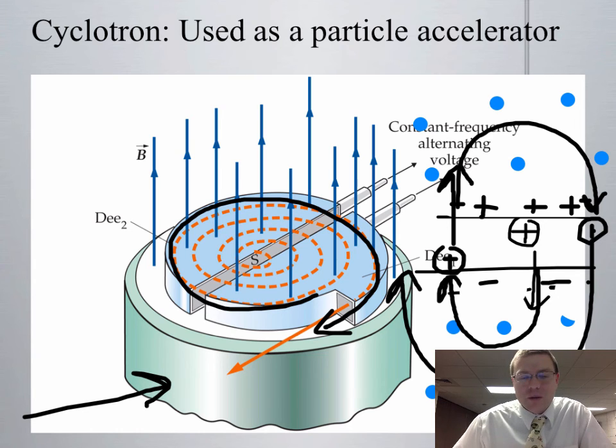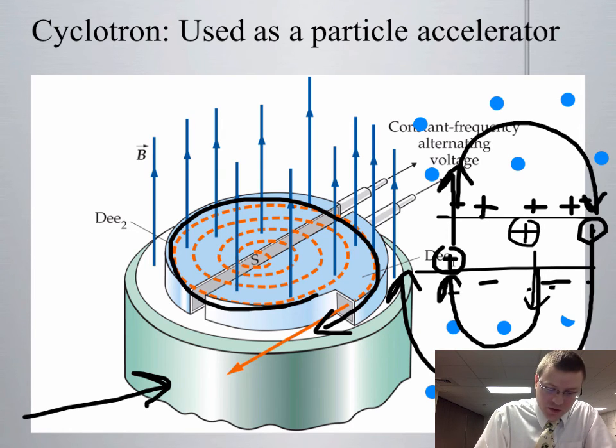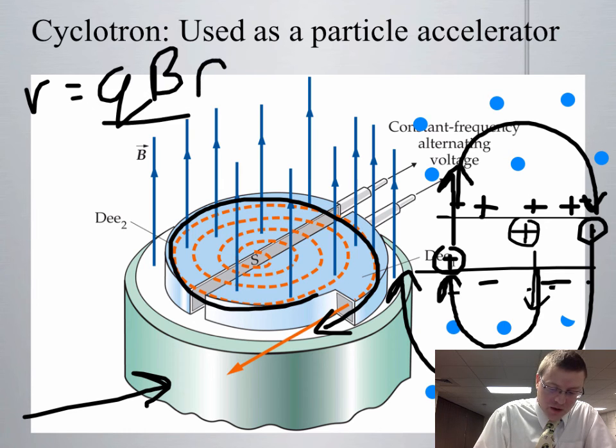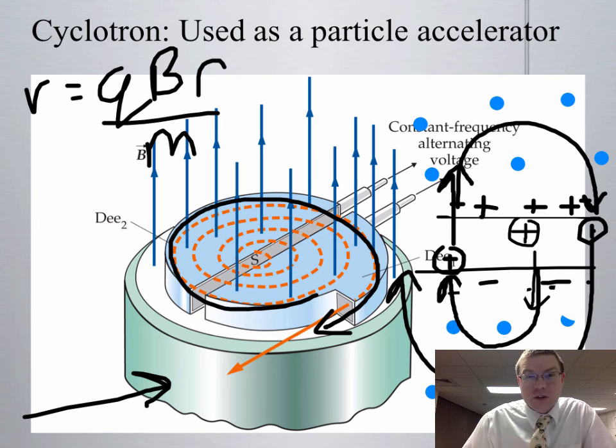So again, the nice thing about this, since it is circular motion, as you go through each of those Ds, we know we can solve for the velocities based on q, B, R over m. The mass of the charge doesn't change, the sign of the charge doesn't change, the magnetic field doesn't change, but the radius keeps changing because the speed keeps changing.